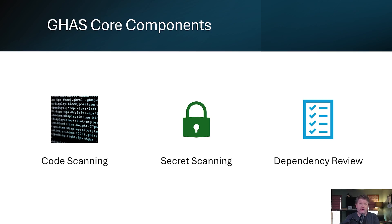These work together to protect different aspects of your code and development process. Here's what makes GHAS different from traditional security tools: it's automated, it integrates directly into GitHub, and it's designed to catch security issues before they reach production. Most features are actually free for public repositories, but you'll need a license for your private repositories.